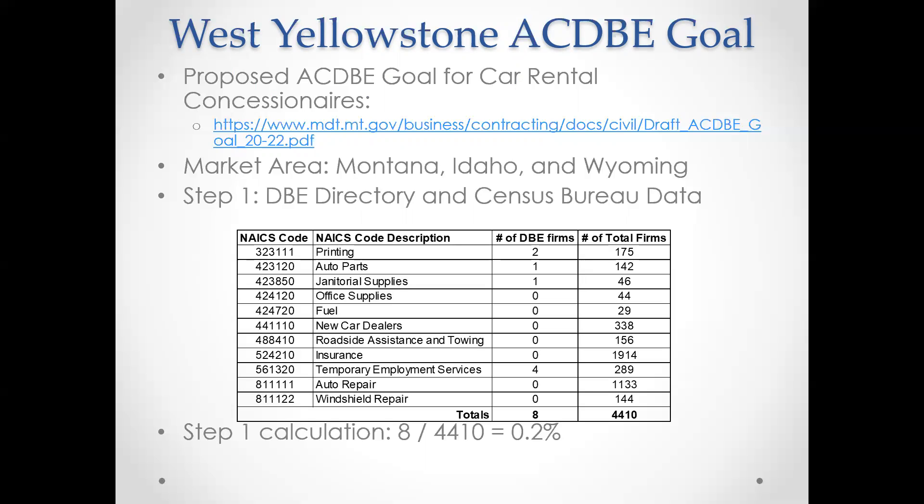Other than car rentals — like restaurants and different shops — didn't meet the criteria, so we just set the goal for car rentals. Since this is new, we're not sure what the market area is, but based on West Yellowstone's logistics and its proximity to three different states, we defined the market area as Montana, Idaho, and Wyoming. The disparity study didn't cover these work types, so we used the DBE directory and Census Bureau data. Work types were based on what Missoula and Billings used in their car rental goals for airport concessionaires, since we had no history on what car rental firms might use with their purchases.